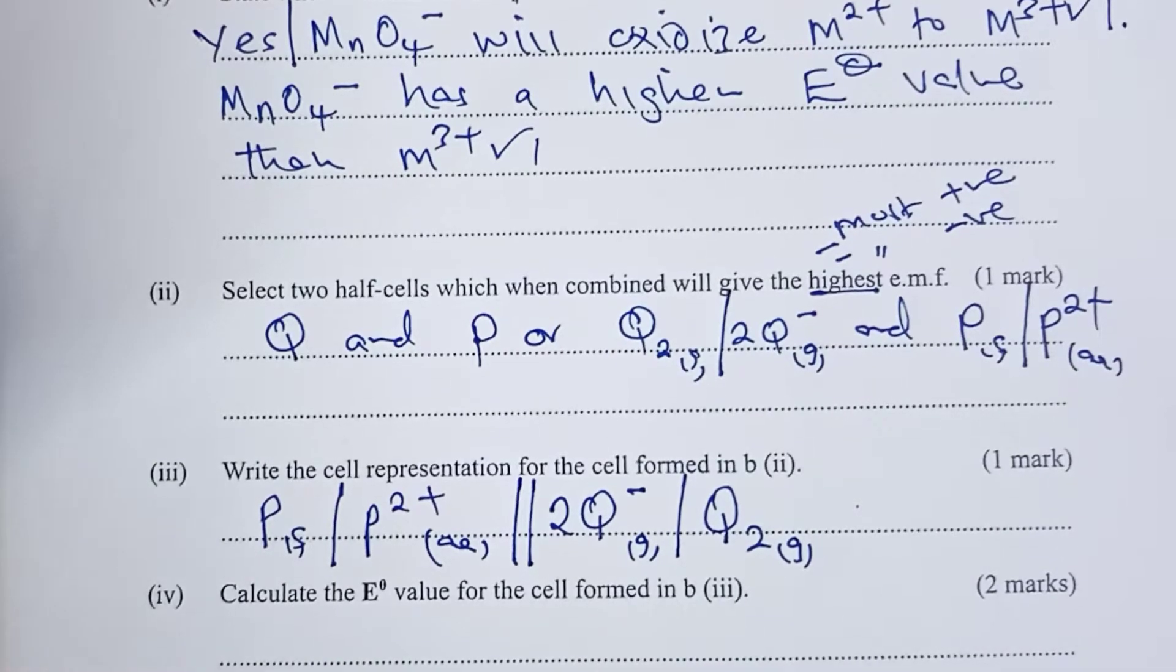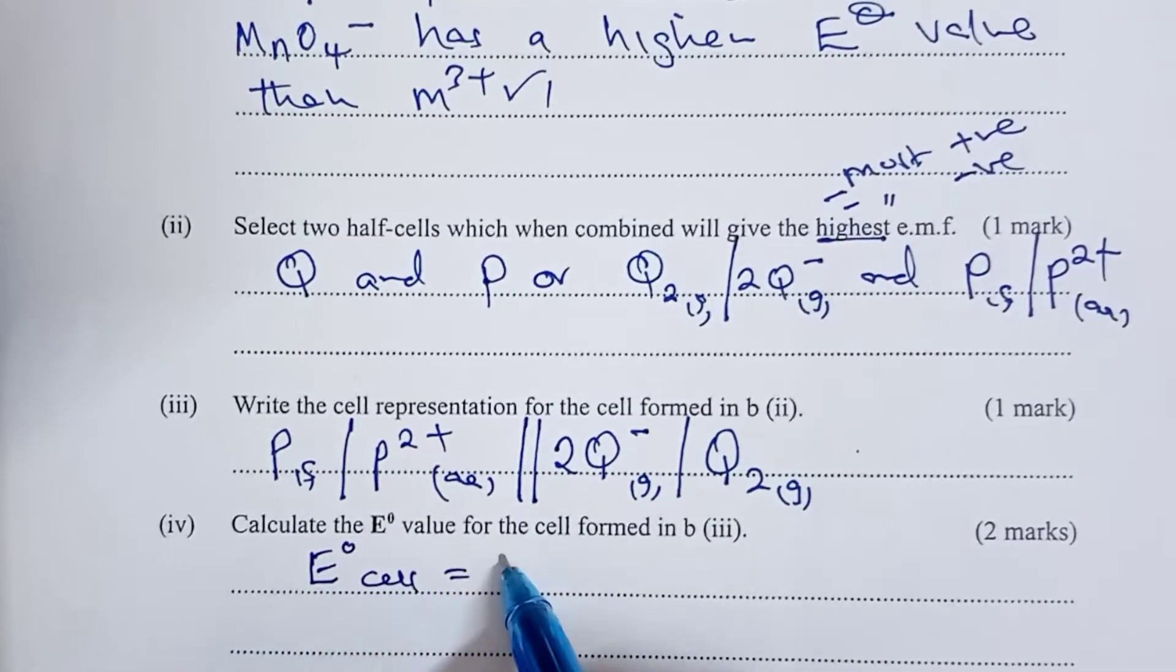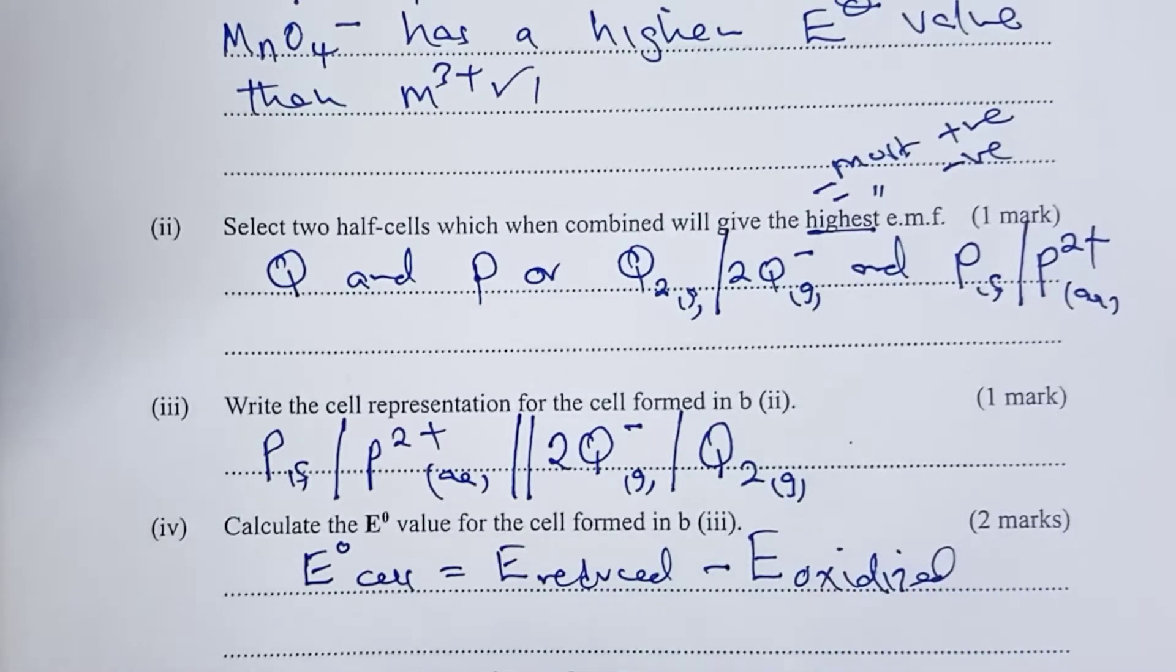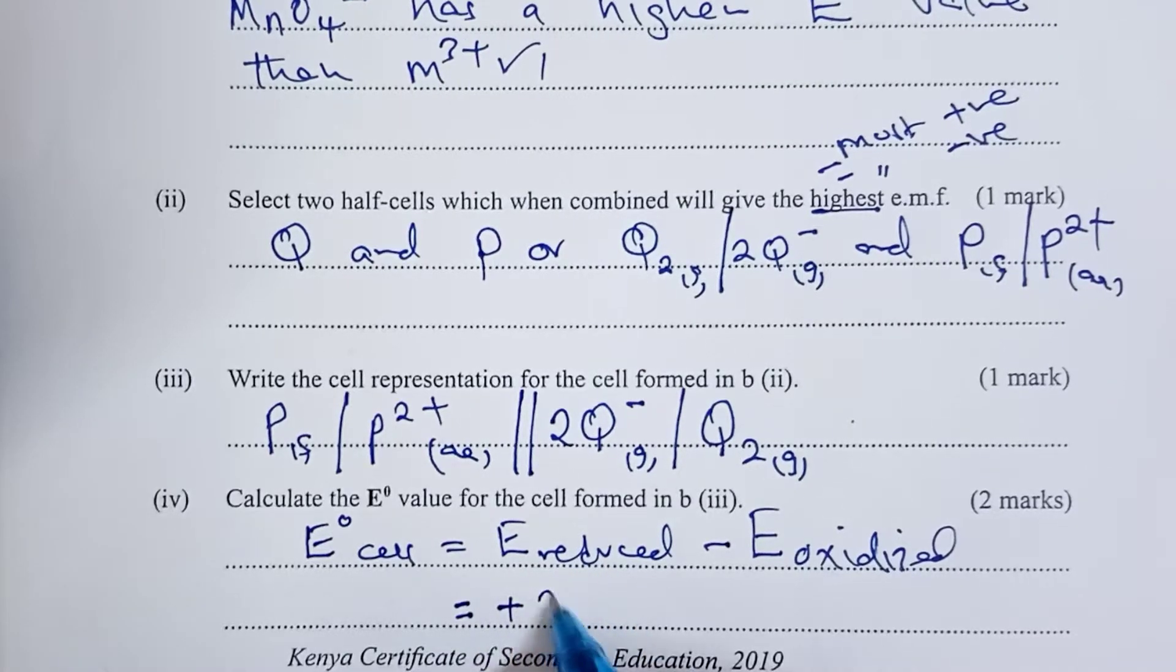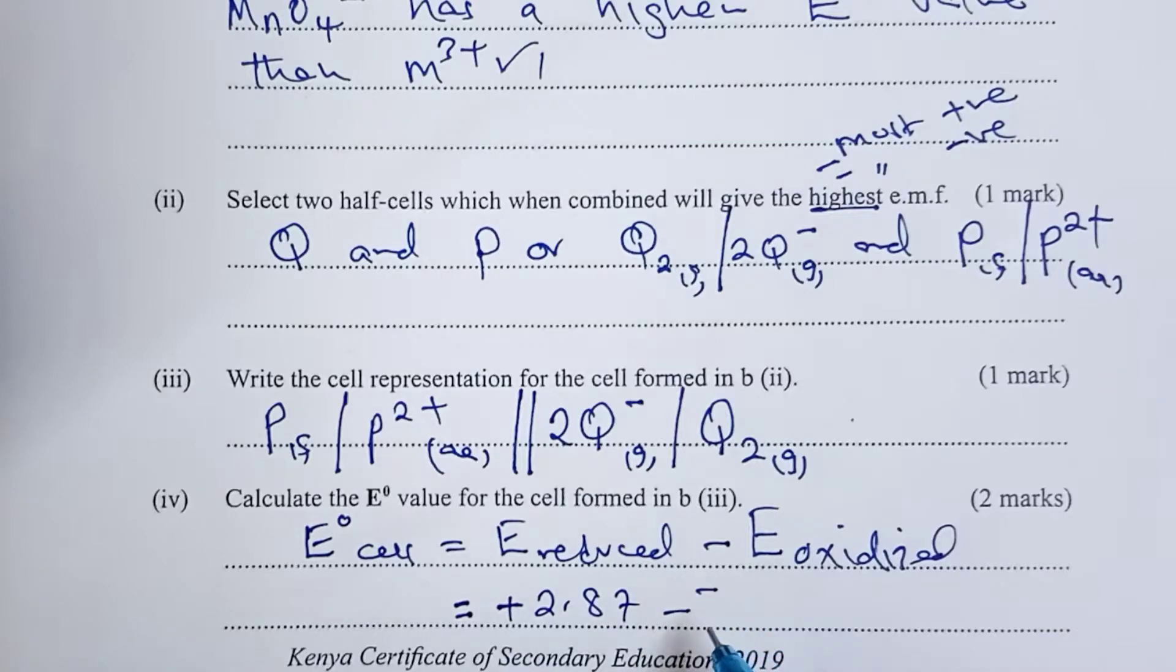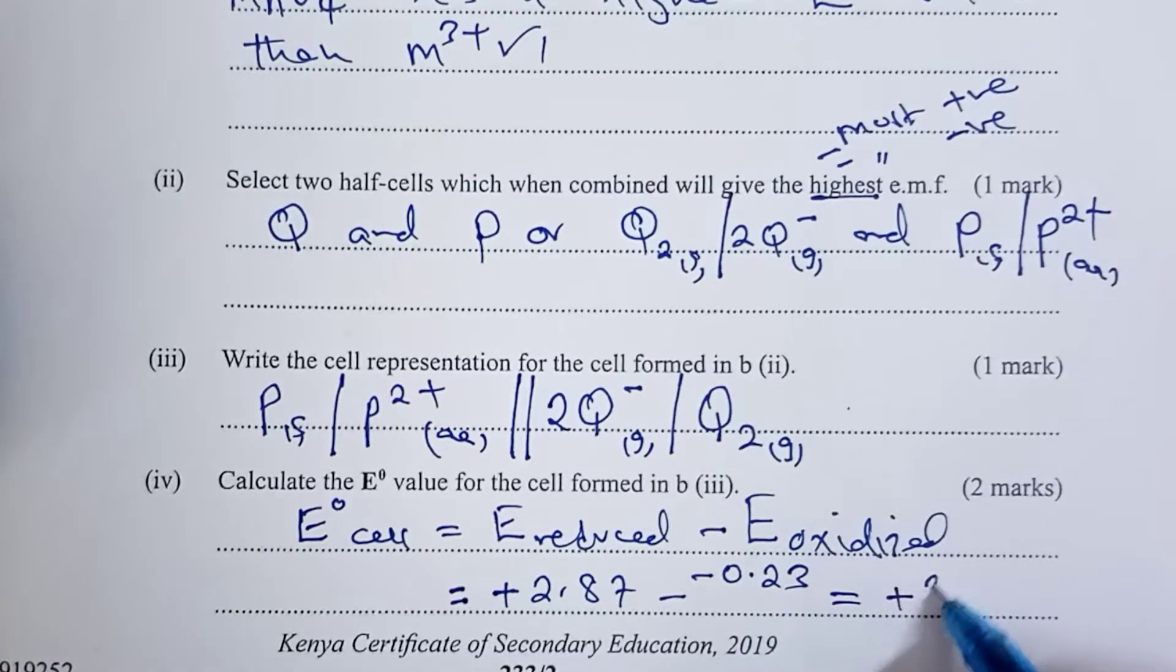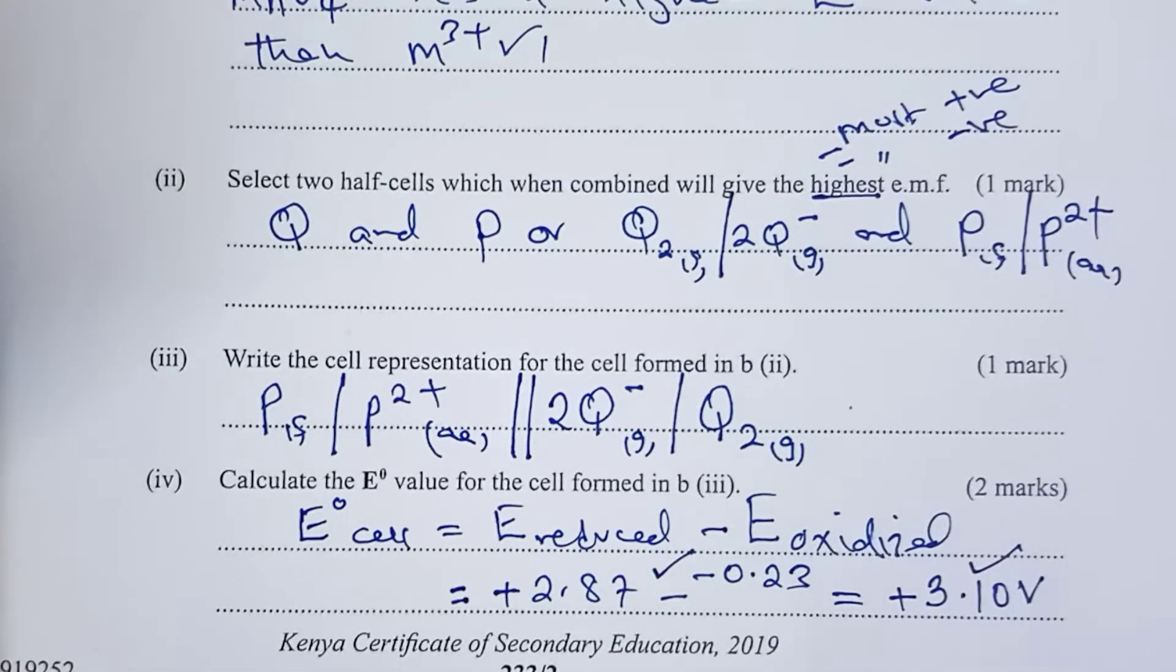We are asked to calculate the E value for the above cell. E naught for the cell is given by E reduced half cell minus E oxidized half cell. Q has E naught of positive 2.87, and P has E naught of negative 0.23. When you do the subtraction, you end up with E cell of positive 3.10 volts. One mark for the subtraction, one mark for the answer. But if the units are missing, you only get half a mark.